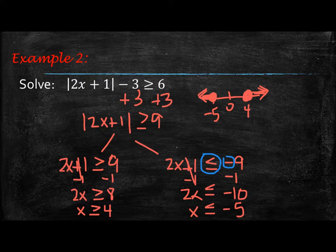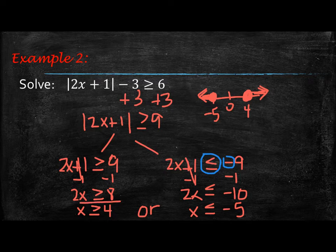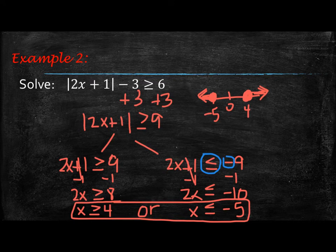Since they're moving in opposite directions, this is an OR statement. x can either be greater than or equal to 4, or x can be less than or equal to negative 5, and you'll just leave it like this. The only time you can combine them into a between statement is if the shaded piece would be in the middle — and it's not.